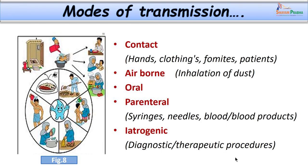Routes of transmission include direct contact from hands of patients or healthcare personnel, clothing, and fomites; airborne transmission by inhalation of dust; oral route; and parenteral route through healthcare interventions. Iatrogenic infections — those resulting from diagnostic or therapeutic procedures — are also a recognized category.